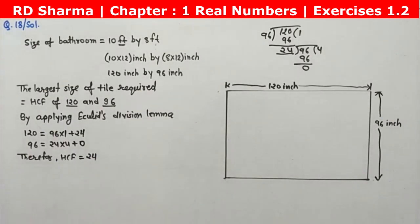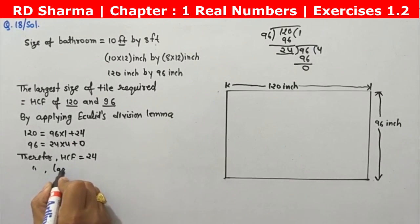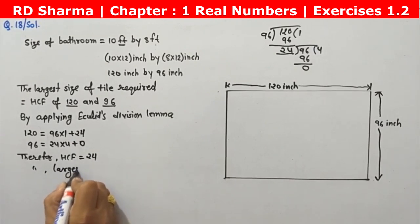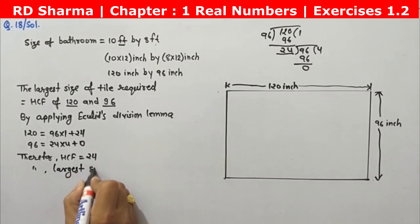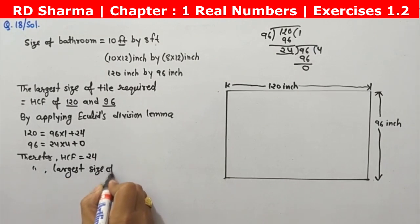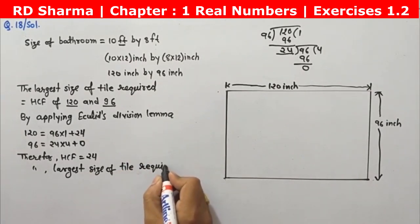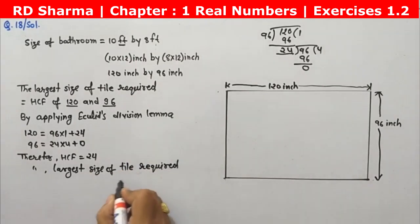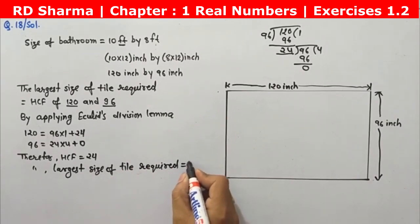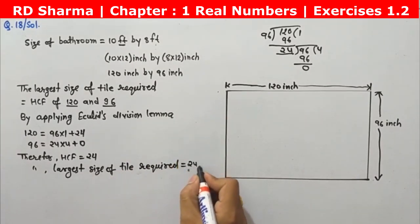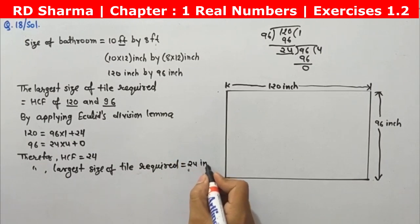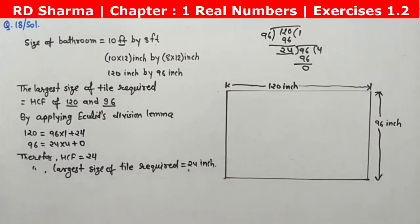Therefore, the HCF is 24. So the largest size of tile required is 24 by 24 inches.